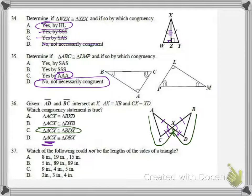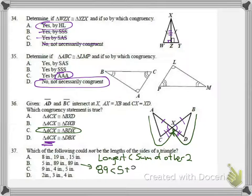And number 37, which of the following could not be lengths of the sides of a triangle? This is when we're given three sides, we have to make sure the longest side is less than the sum of other two. So if I look at my list here, 89 on B is the longest side. 89 is less than 5 plus 89. So we know that makes a triangle, so that one's okay.